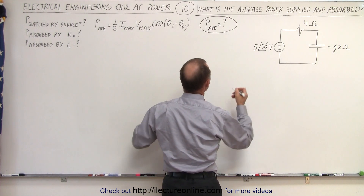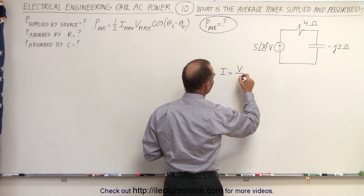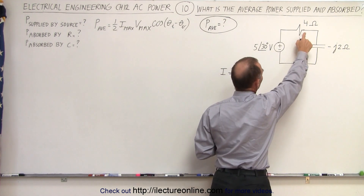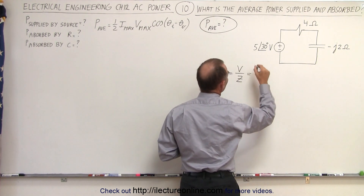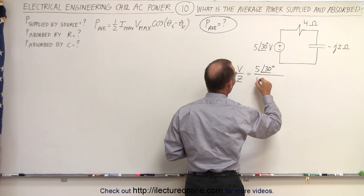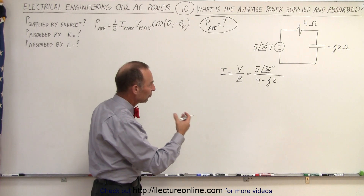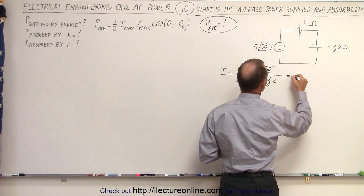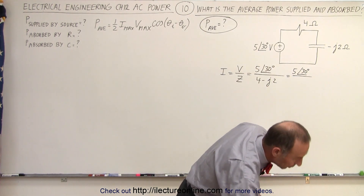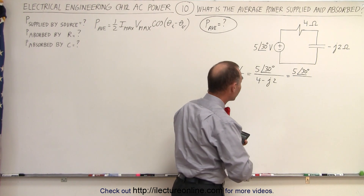The current I is equal to the voltage divided by the total impedance. The impedance combines a resistor and a capacitor, so that will be equal to 5 volts with a phase angle of 30 degrees, divided by 4 minus J2. To perform that division, we convert to magnitude and phase angle format. The magnitude is the square root of 16 plus 4, which is the square root of 20, giving us 4.47.